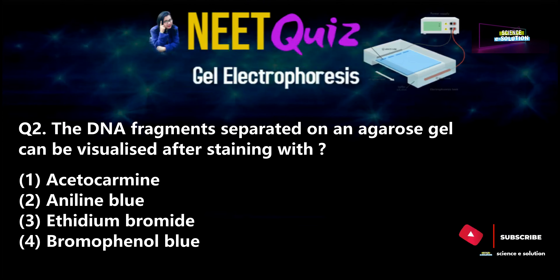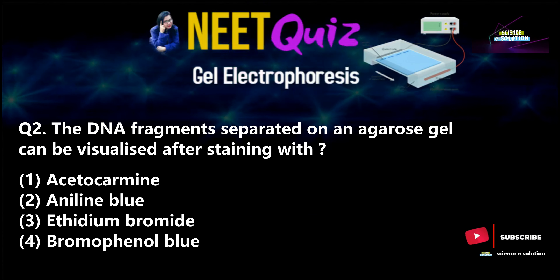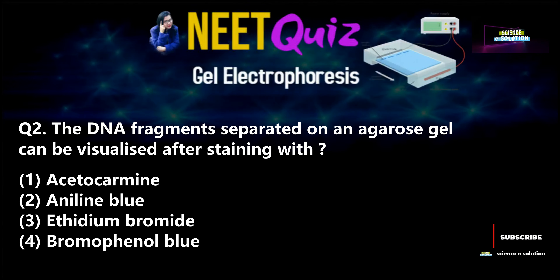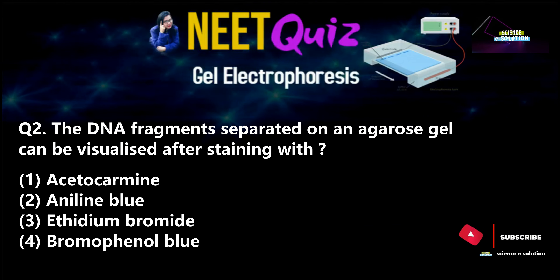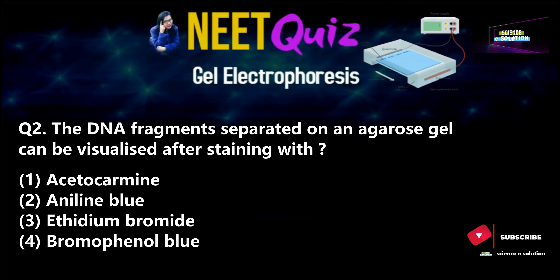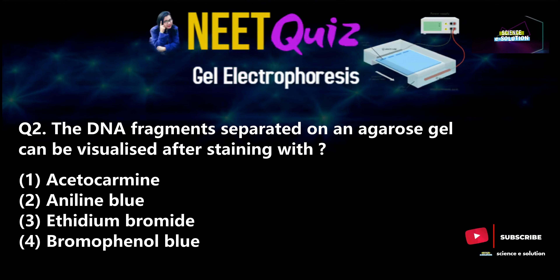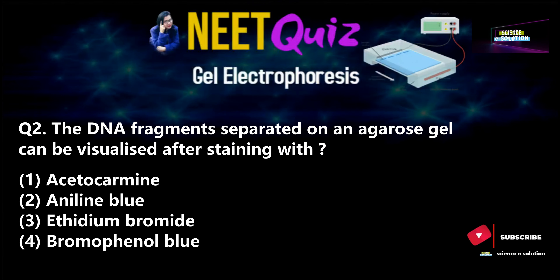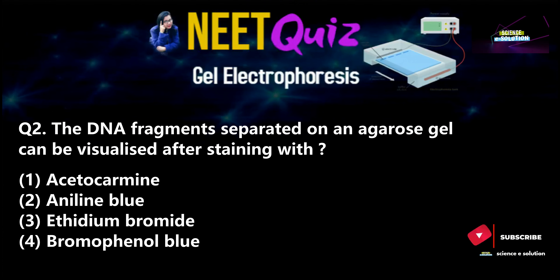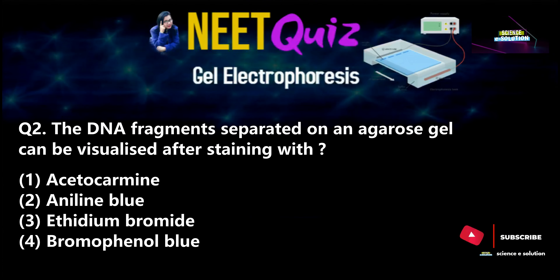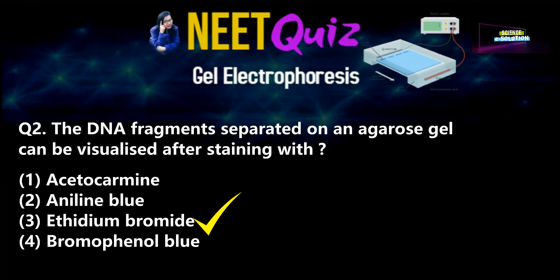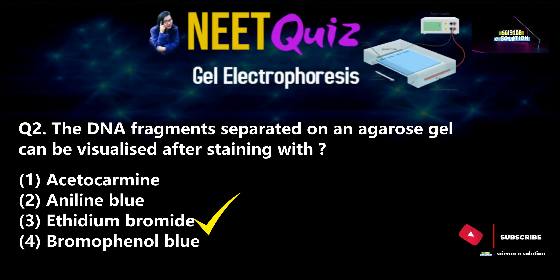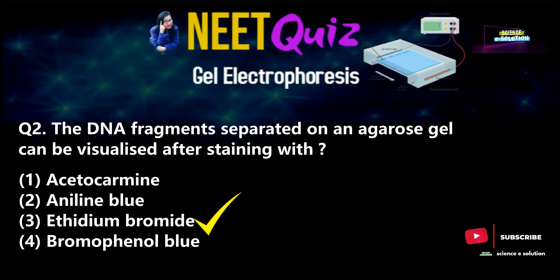Question number two, which was asked in 2017: The DNA fragments separated on an agarose gel can be visualized after staining with — Options: Acetocarmine, Aniline blue, Ethidium bromide, or Bromophenol blue. The correct answer is option number three — Ethidium bromide. This stain is very, very important — you have to mark it and be aware of it.